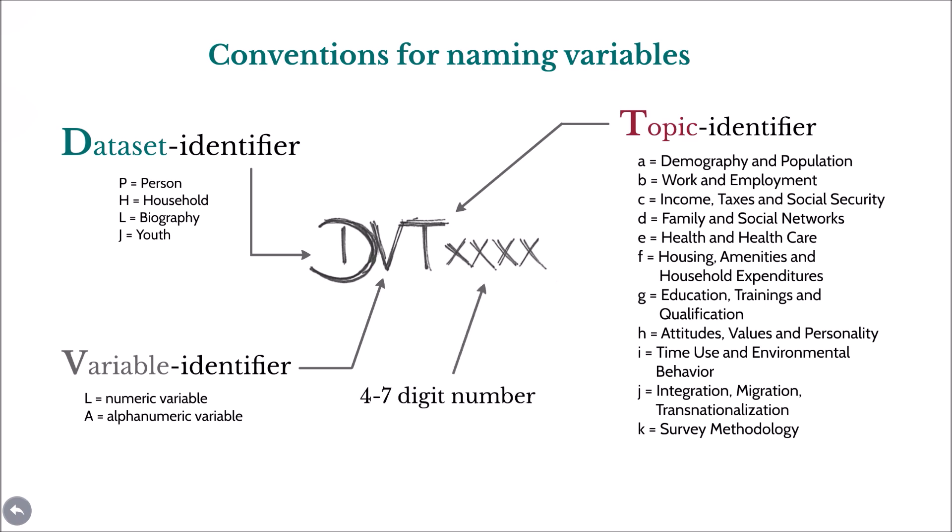The first three digits are followed by a four to seven digit number. Some variables will additionally carry an underline H or underline V as a suffix. This indicates that the respective variable has been collected in slightly different ways in different years of the survey and that harmonization is required when using it across all the years. The underline V indicates the different versions, while the underline H is the SAP's suggestion for harmonization.